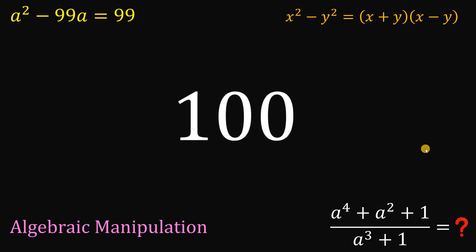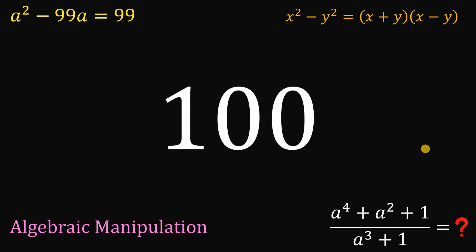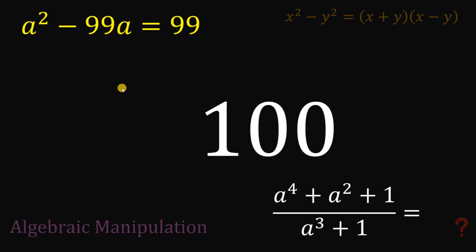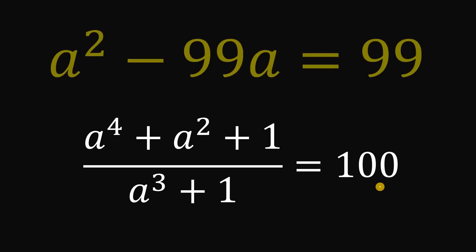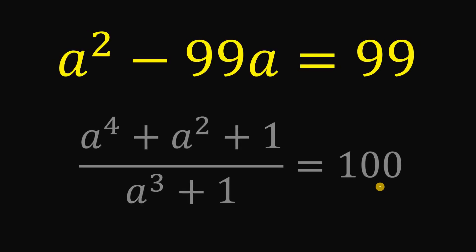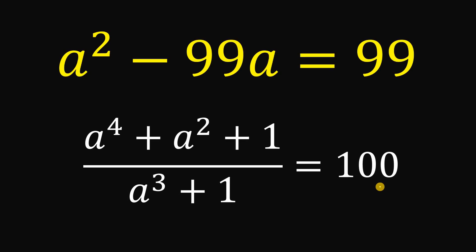And this is our answer to this question. Therefore, given a squared minus 99a equals 99, the numerical value of a to the fourth power plus a squared plus 1, all over a cubed plus 1, is simply equal to 100. And as always, we are done.